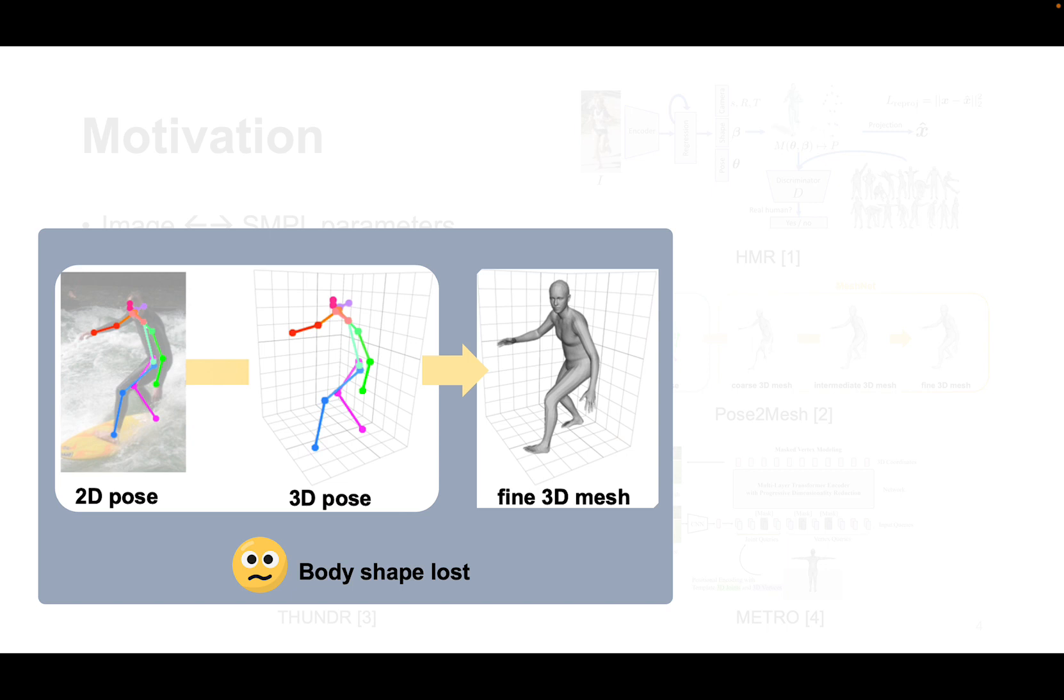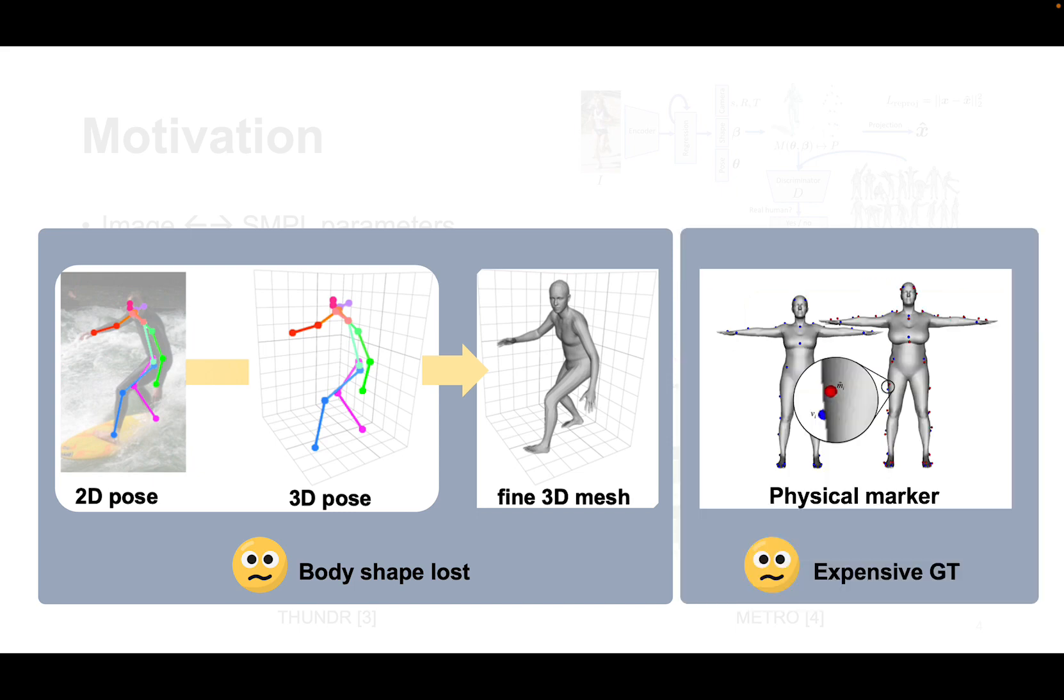However, accurate body shapes are difficult to be recovered from the oversimplified 3D skeletons. The physical markers can be interpreted as a simplified representation of body shape and pose. Although it is very accurate, it is expensive and very few datasets have labels for them, which limit their application to wild images without markers.